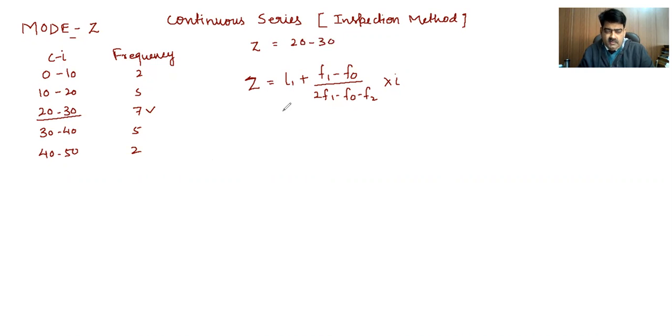So here, 20 is L1, and 7 is F1. Before 7, that is 5, is F0, and this 5 is F2. And the interval, you can see, is of 10.